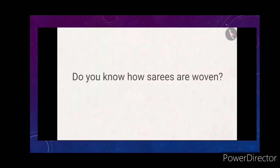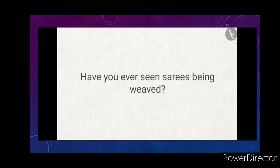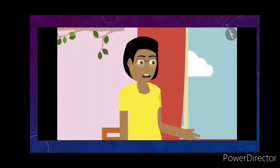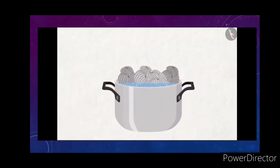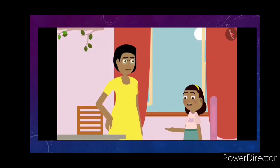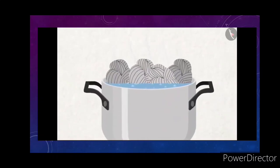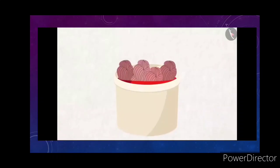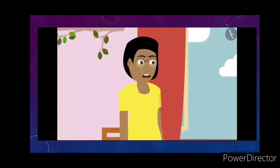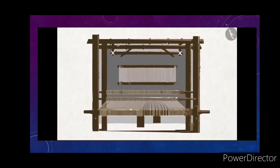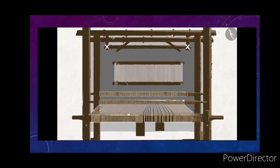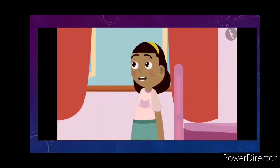Ziya asks how saris are woven. Her mother explains the process: first, bundles of thread are brought from the market and put in boiling water — boiling water removes all stains and dirt. Then the threads are dyed in different colors, dried, and rolled into bundles. Then these bundles are put onto looms and saris are woven from them.